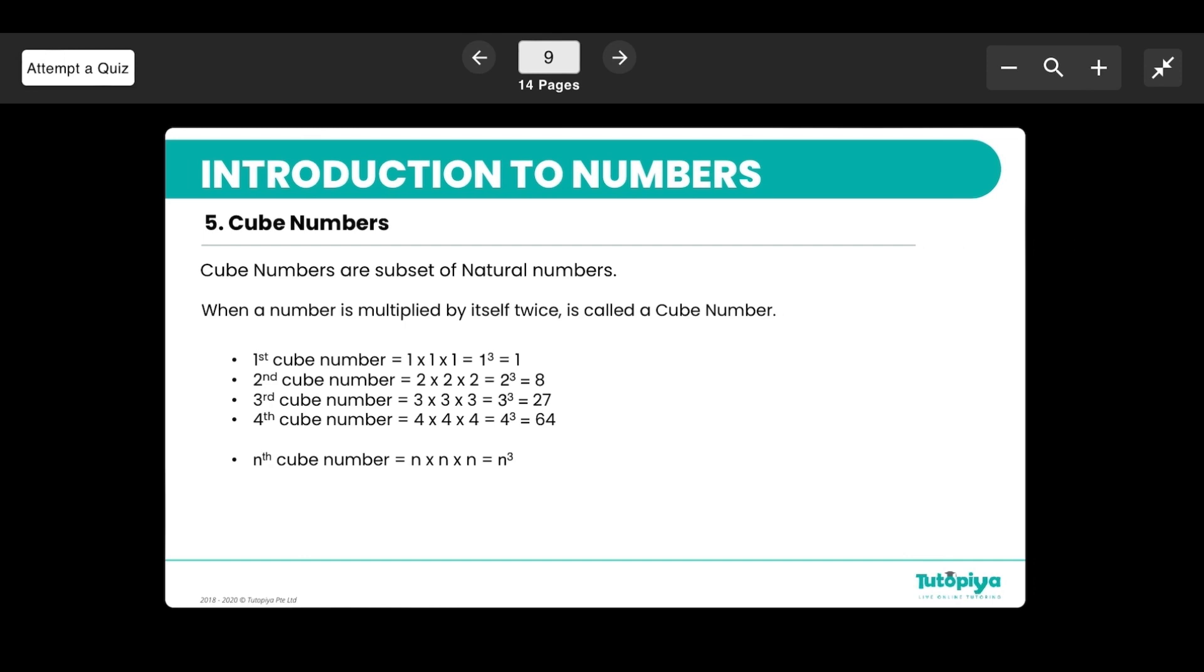Moving on to cube numbers. Cube numbers and square numbers are very similar just that the square number is basically the number multiplied by itself once and the cube number is the number multiplied by itself twice. So here we are not only multiplying two times two but we're multiplying two times two times two which is equivalent of two cubed that is eight. And same way we have three times three times three which is three cubed which is 27. So 8 is a cube number 27 is a cube number so is 64.